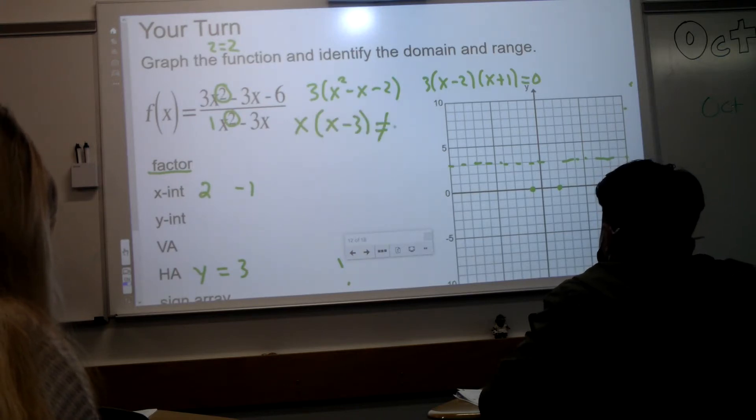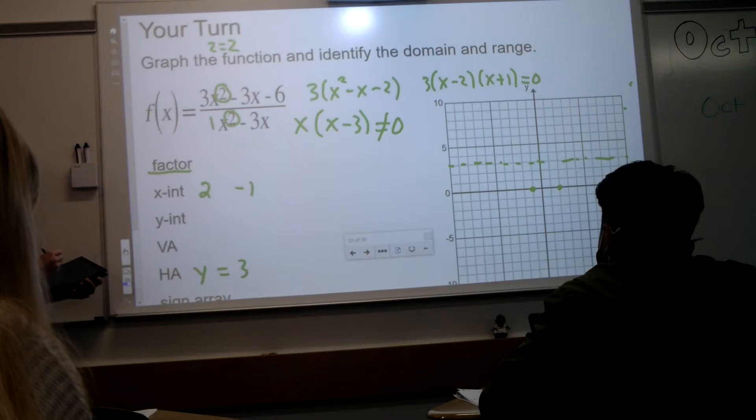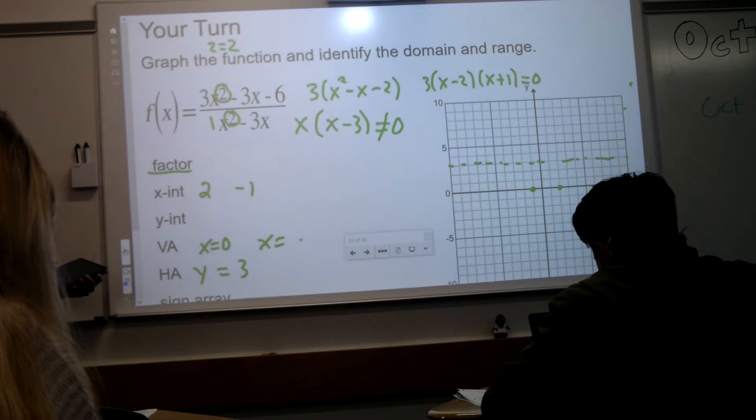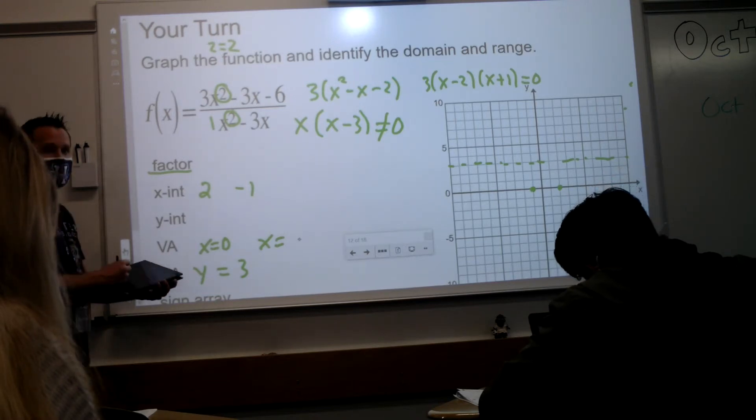Now, we don't want that to be zero, so what values of x would make that zero? Zero. Zero. Zero. Okay. And what else? Three. Yep.